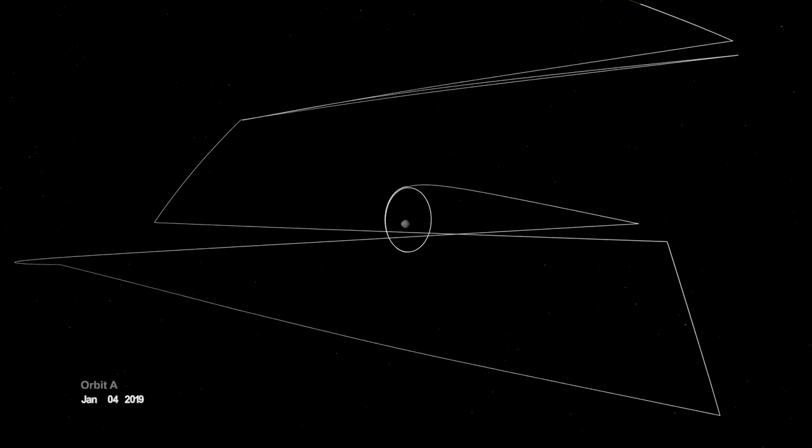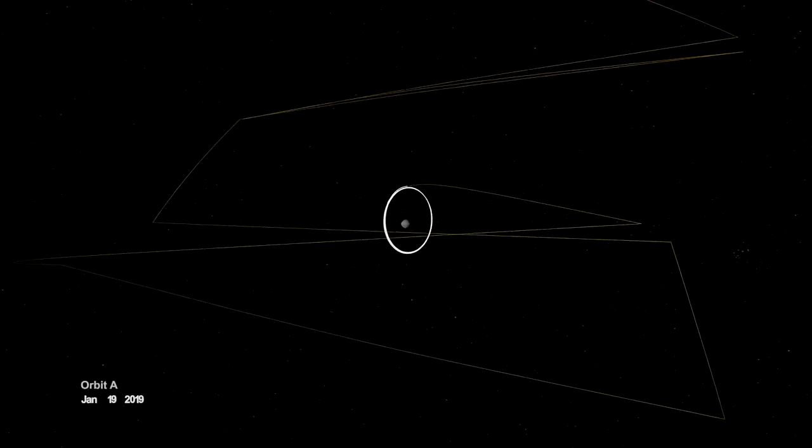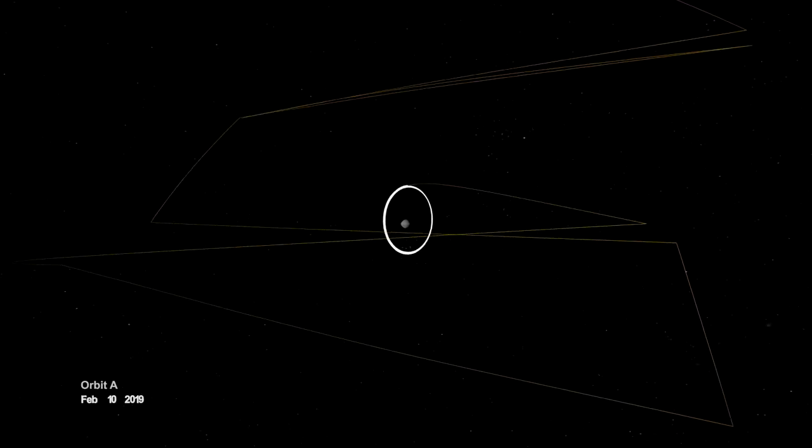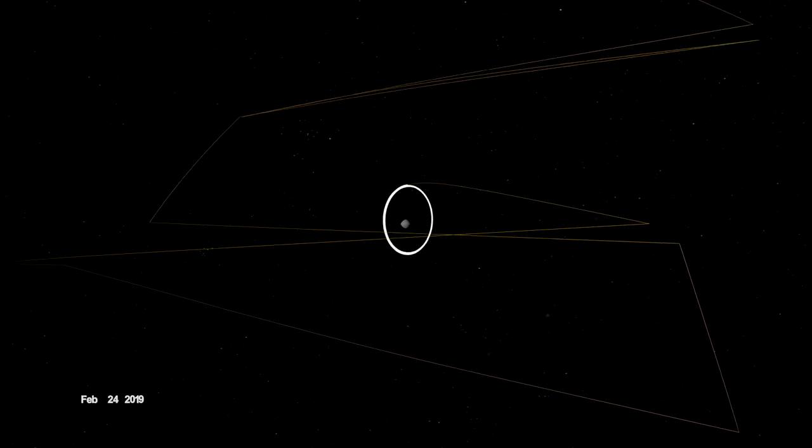On New Year's Eve, OSIRIS-REx was captured into orbit by Bennu's minuscule gravity, making it the smallest world ever to be orbited by a spacecraft.